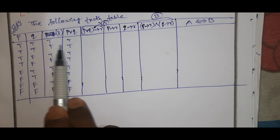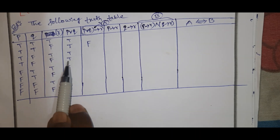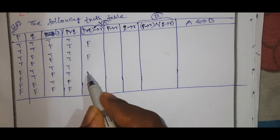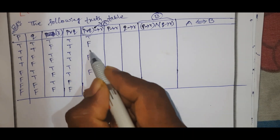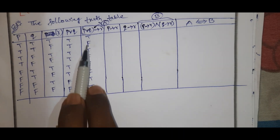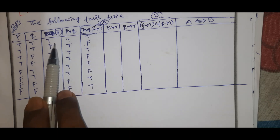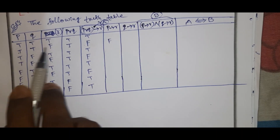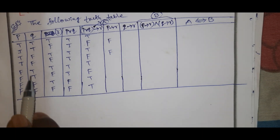First statement true, second statement false is false. First statement is true and second statement is false. In this case we have three — the remaining one is true.